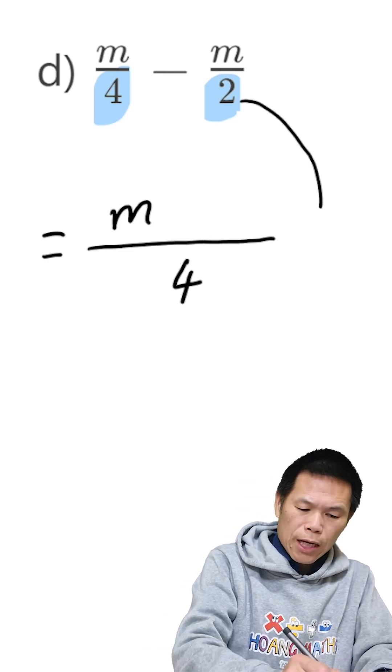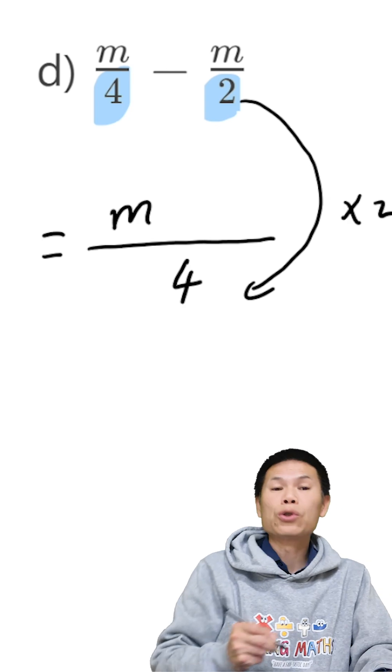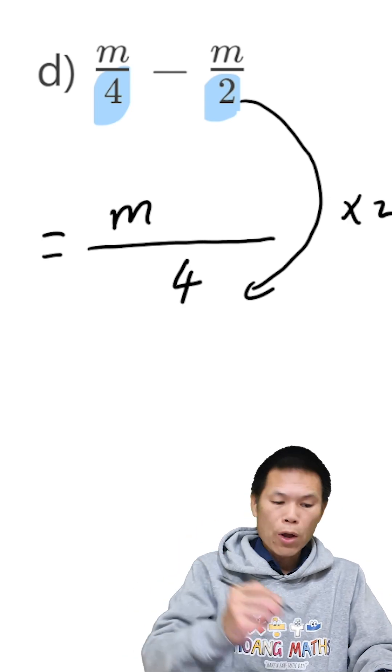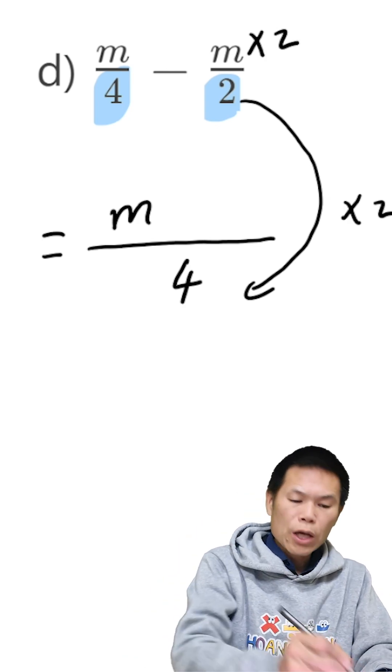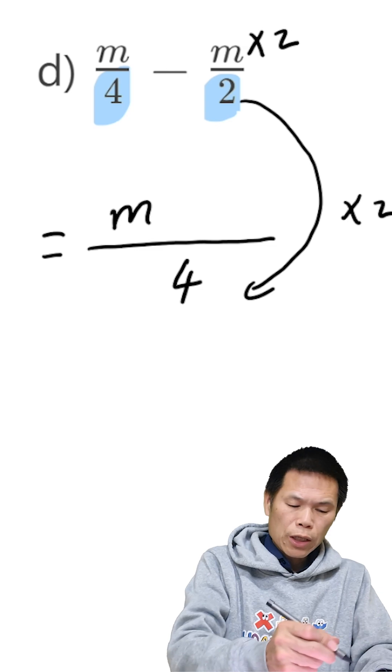And from here to here, we times 2. Because 2 times 2 give me 4. So this must time by 2. So m times 2 is 2m.